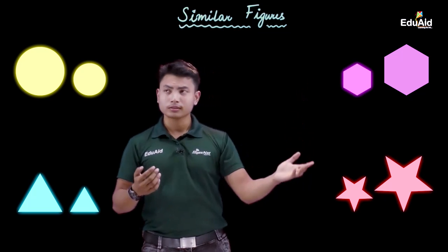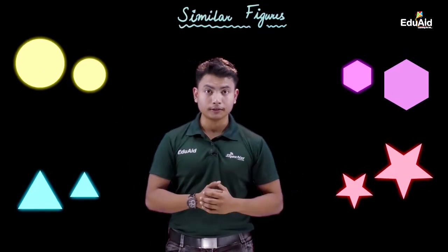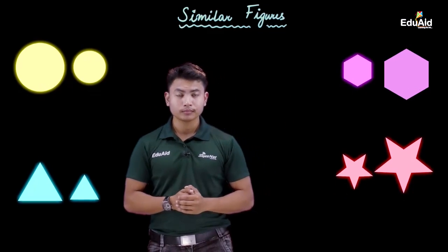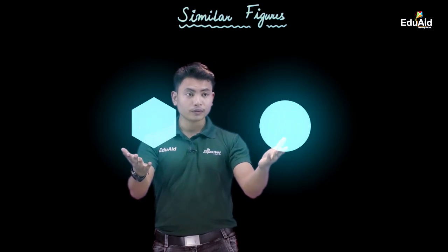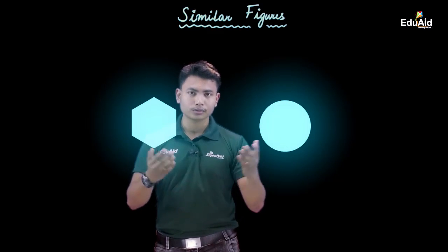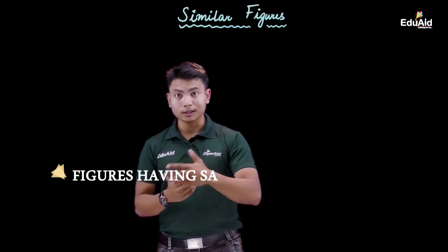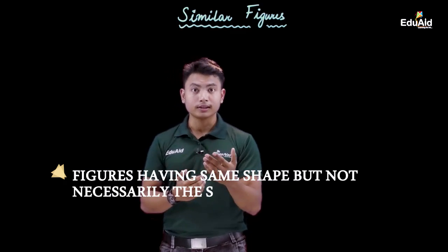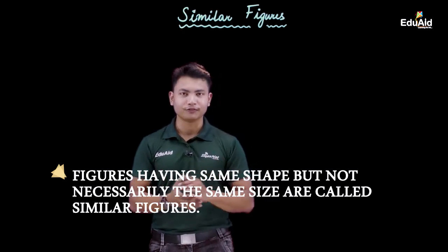Let's consider these figures. All these figures look similar but their sizes are different. Now let's consider these two figures — here the sizes are the same but they look different. So we can conclude that figures having the same shape but not necessarily the same size are similar figures.